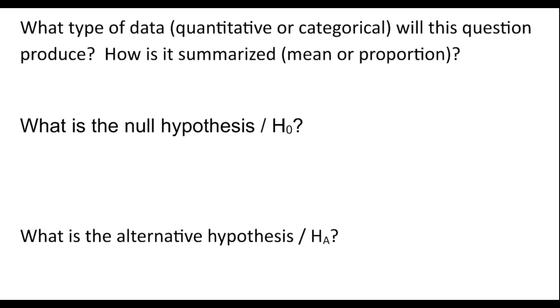That brings us to our next part: what type of data are we working with? If my question was, is winter your favorite season, then the answer is going to be yes or no, a category. So that's categorical information. Categorical information is summarized with a proportion. So I know I'm dealing with a proportion about whether winter is or is not the favorite season.